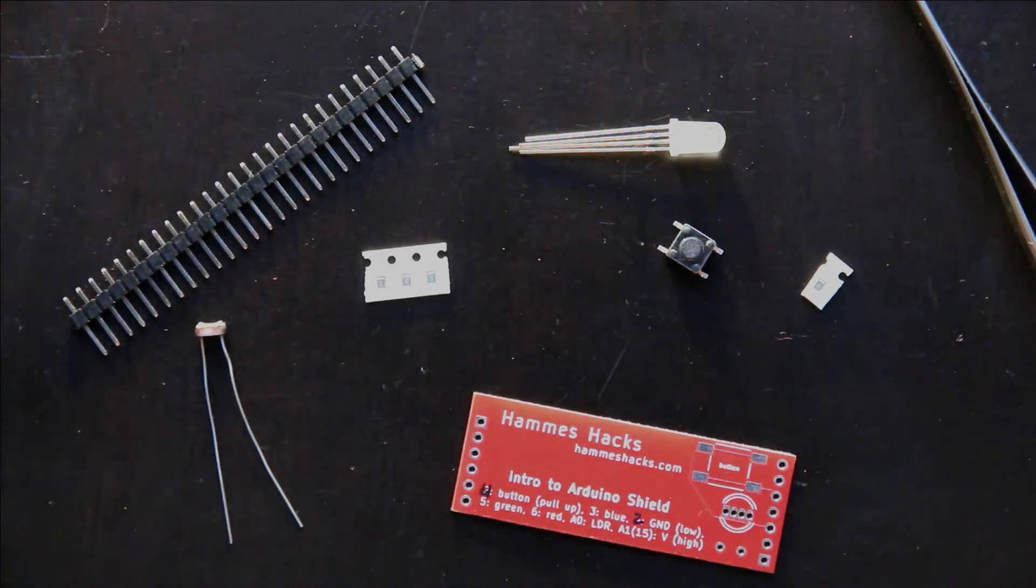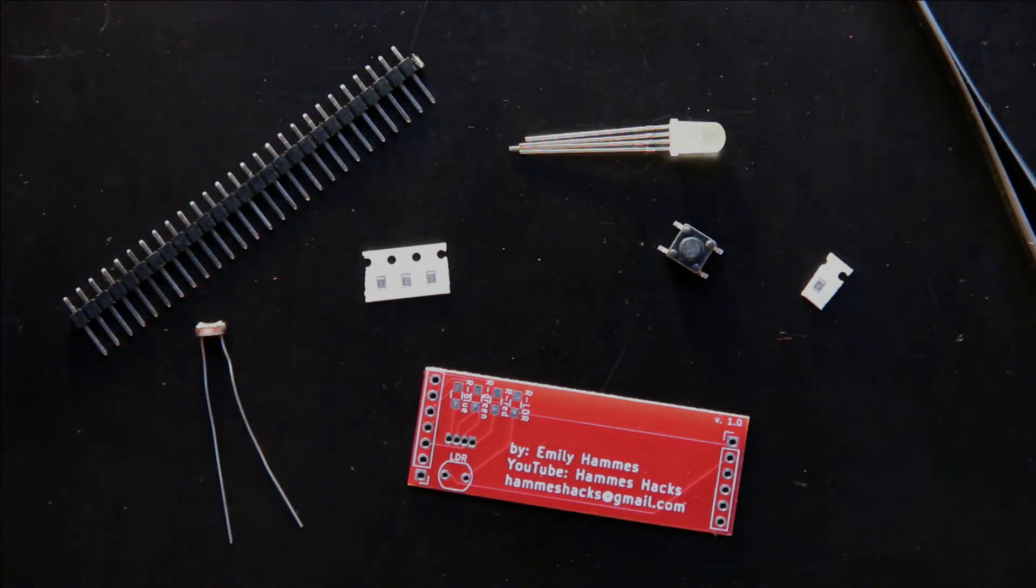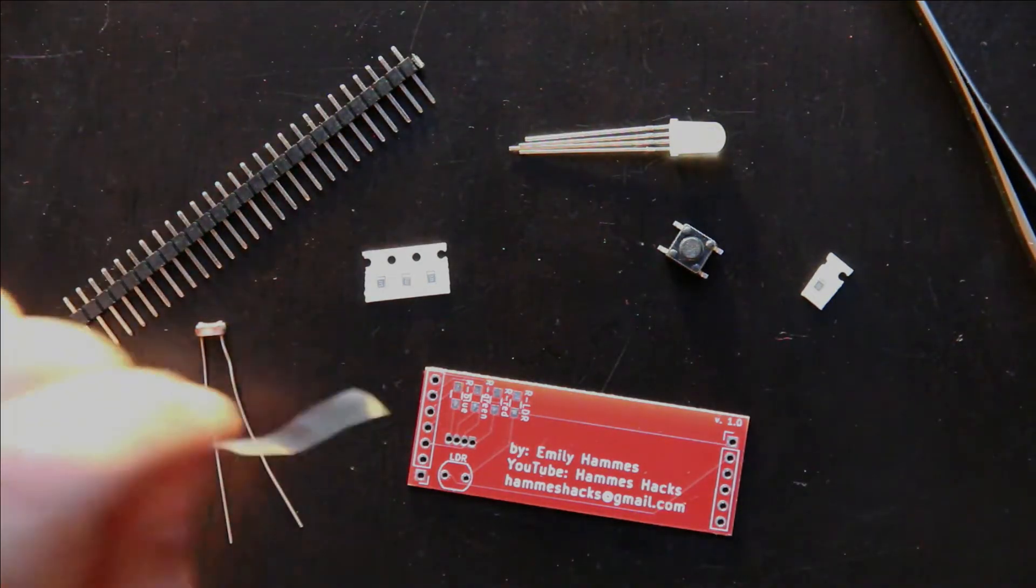In this video, I'm going to solder together the Intro to Arduino shield. To do that, I start by putting a small amount of solder on one side of each resistor pad set, like this.